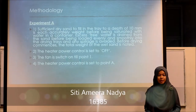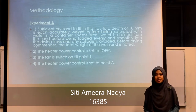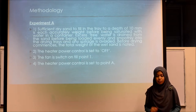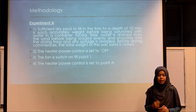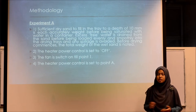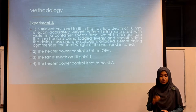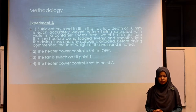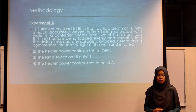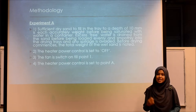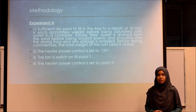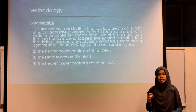The methodology of this experiment is divided into two parts. For Experiment A, first, sufficient dry sand was filled into a tray at a depth of 10mm, accurately weighed before being saturated with water inside a container. Excess free water is drained before being loaded evenly into the drying trays. The total weight of the wet sand is noted before drying commences. The heater power control is set to OFF, the fan is switched ON to 0.1, and then the heater power control is set to 0.8.